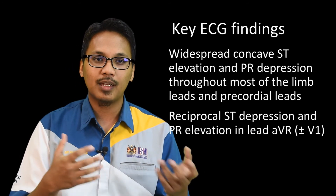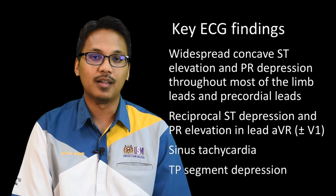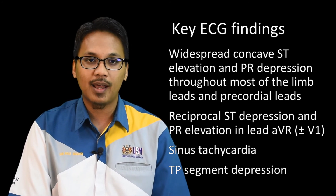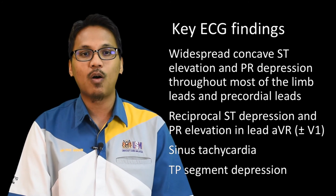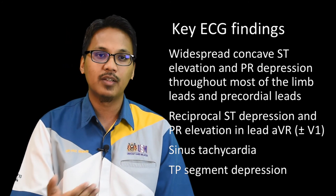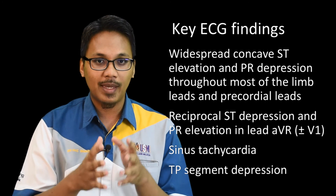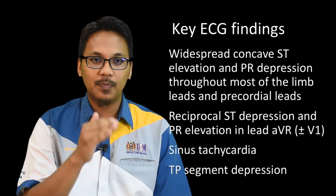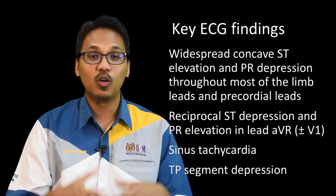Apart from that, you are also expected to see sinus tachycardia, which is very common in acute pericarditis, and can be due to pain and/or because of the pericardial effusion. You may also see what we call the Spodick's sign, which is a TP segment depression. That concludes our case number two. Thank you.